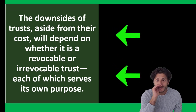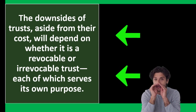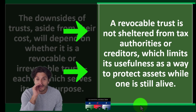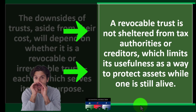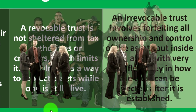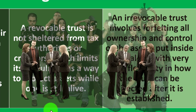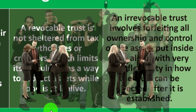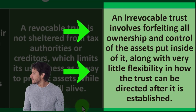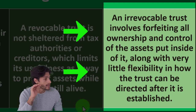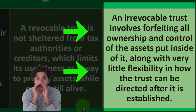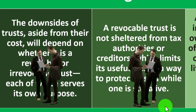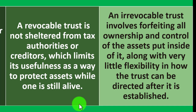What are some disadvantages of living trusts? The downsides depend on whether the trust is revocable or irrevocable. A revocable trust is not sheltered from tax authorities or creditors — it doesn't provide the same kind of asset protection shield as a corporation. An irrevocable trust involves forfeiting all ownership and control of the assets placed inside it, along with very little flexibility in how the trust can be directed after it is established.